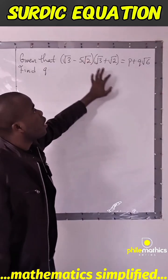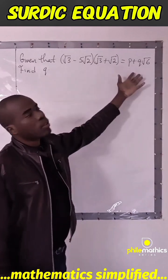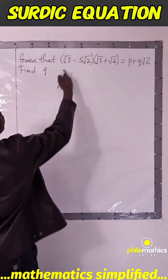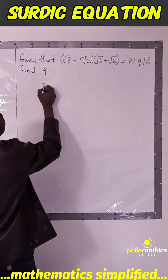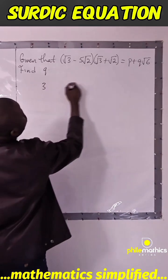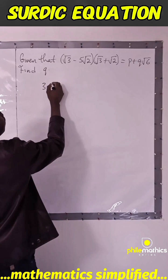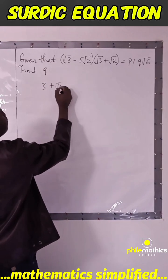And then compare the coefficients on left and right. If I open this bracket, 3 times √3 is 3√3. √3 times √2 will give me plus √6 minus...